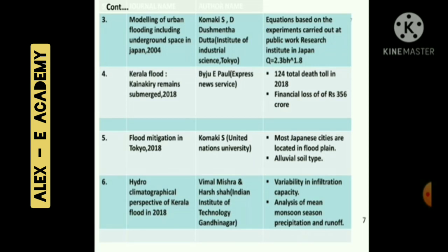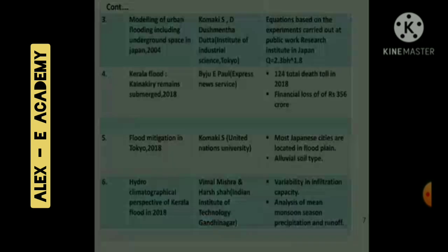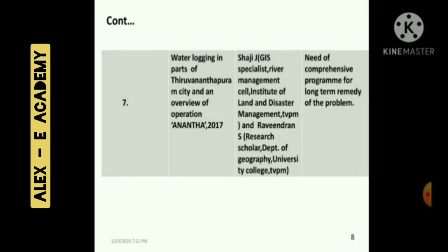Fourth is the Kerala flood, with a financial loss of Rs. 356 crore. Fifth is flood mitigation in Tokyo in 2018 — most Japanese cities are located in flood plains. Sixth is a hydroclimatographic perspective of the Kerala flood in 2018, covering variability in infiltration capacity. Seventh is waterlogging in parts of Thiruvananthapuram City and an overview of Operation Ananda in 2017, highlighting the need for a comprehensive program for a long-term remedy.